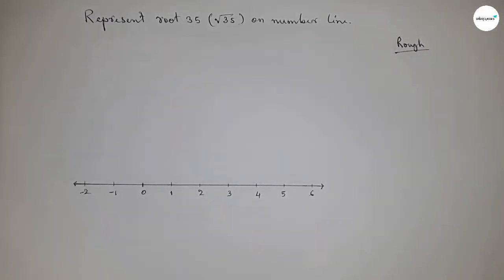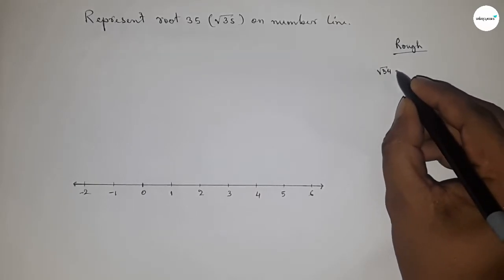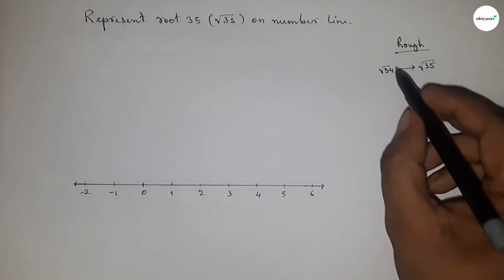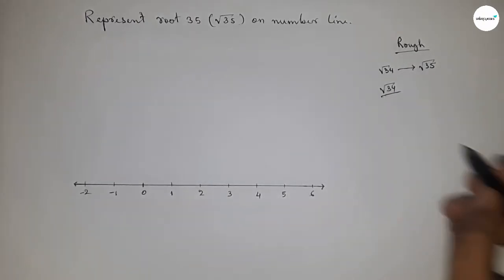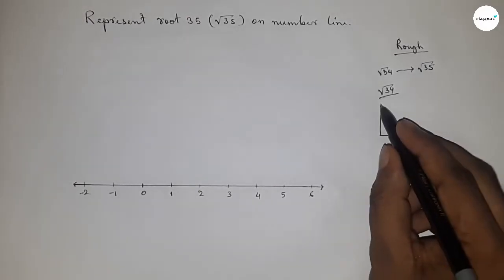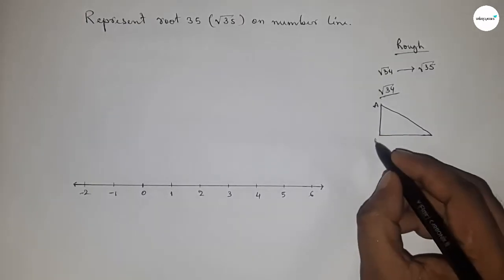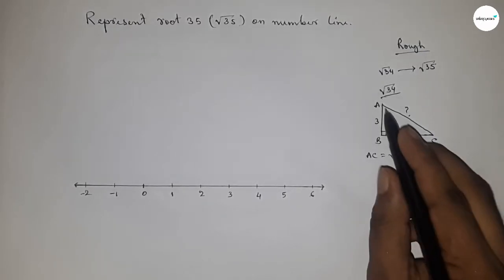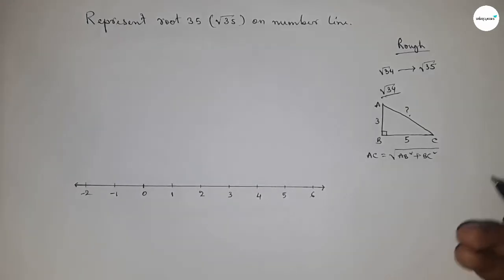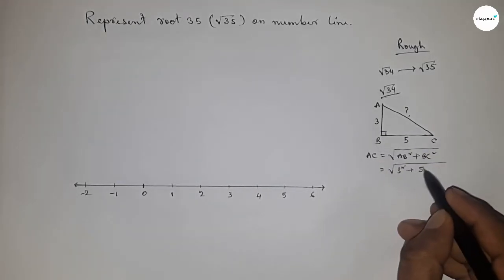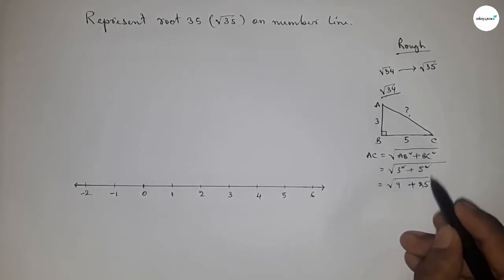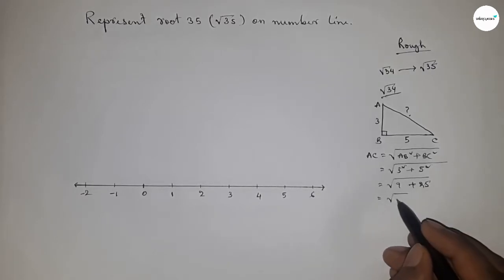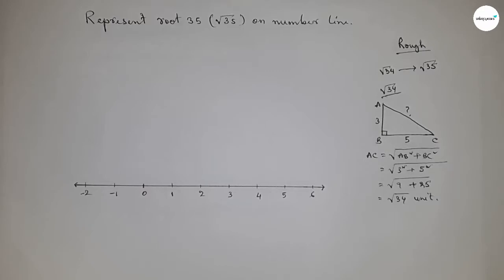Now discussing the calculation. First we have to represent root 34, then root 35. For root 34: if there is a right angle triangle ABC with base five units and height three units, then by Pythagoras theorem, hypotenuse equals root of height squared plus base squared, which is root of three squared plus five squared, that is root of nine plus twenty-five, so this equals root 34 units.